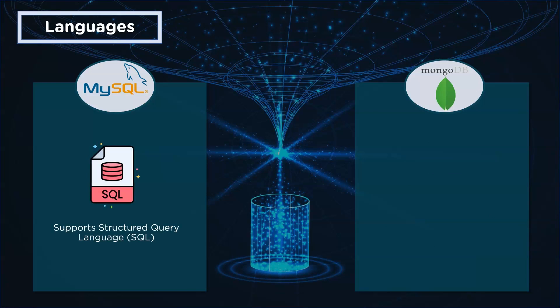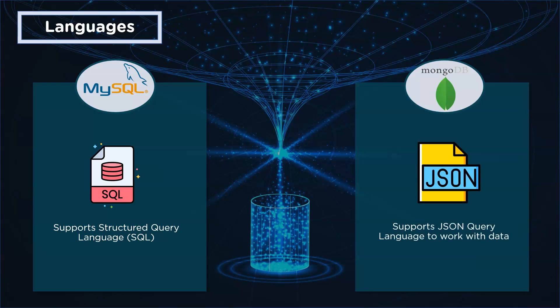Next up is languages. MySQL uses the Structured Query Language to perform actions on the database — it is used to retrieve data, add data, update, and create new datasets. In the case of MongoDB, it supports a JSON query language to work with data.